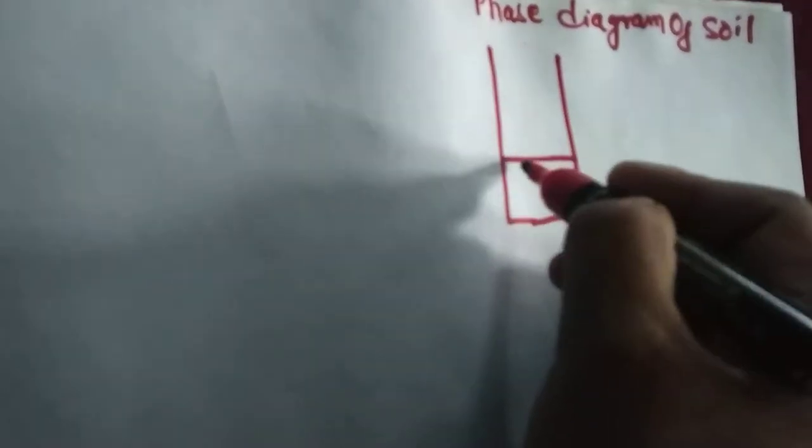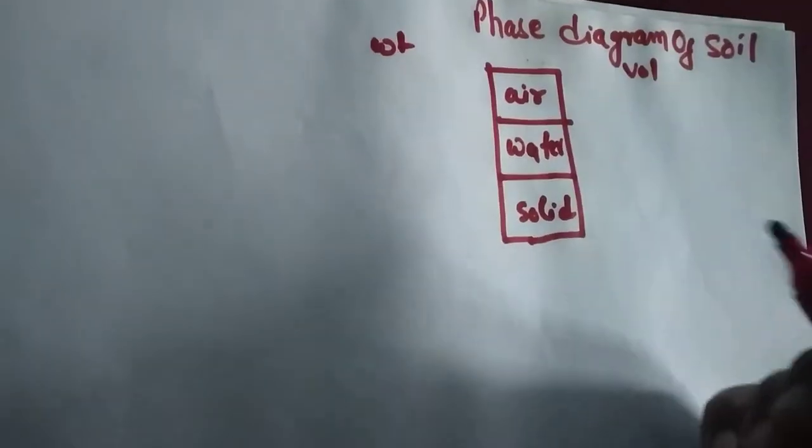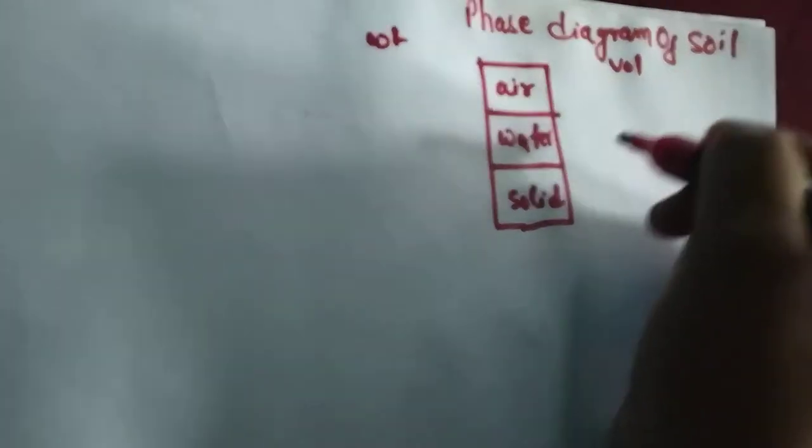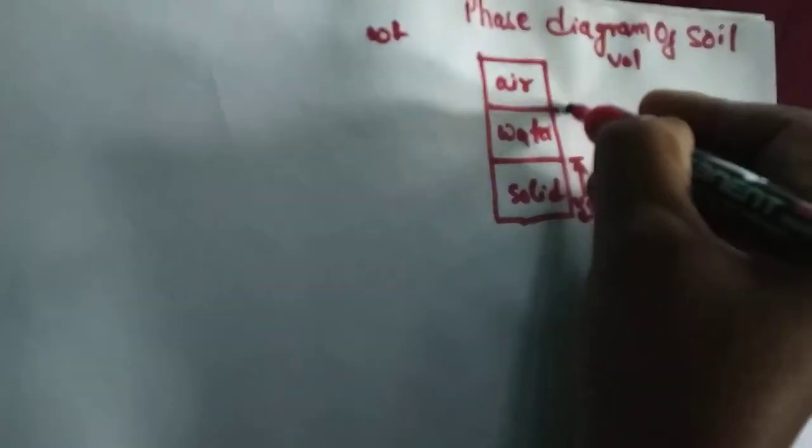To understand this topic, let's begin with the phase diagram of soil. Up to this level: this is solid, this is water, and this is air. Let this side be volume symbol and this side be weight symbol.